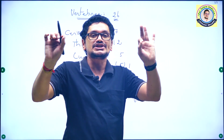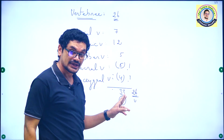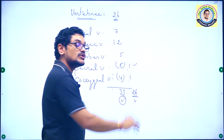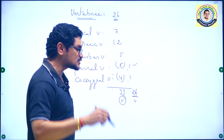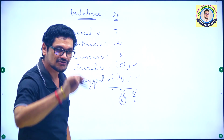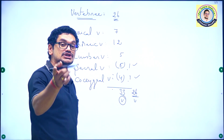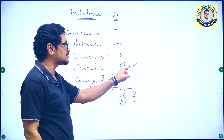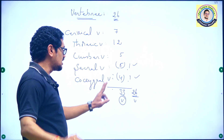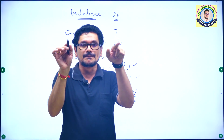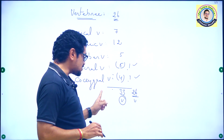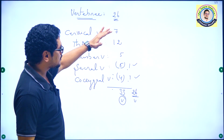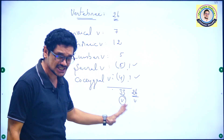If a question asks how many vertebrae are present in the human being, you have to answer 26, not 33. For sacral vertebrae after fusion, only 1 bone is present — sacrum. For coccygeal region, only 1 bone — coccyx. You shouldn't take the number of bones before fusion. Sacrum is also triangular in shape, and only 1 coccyx is present. So 26 vertebrae total.